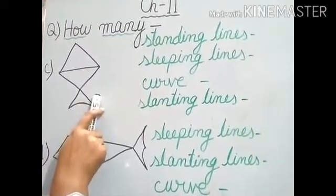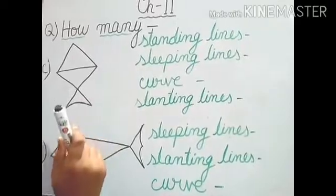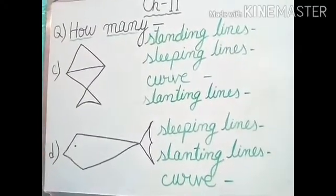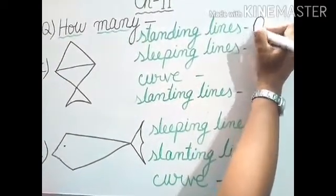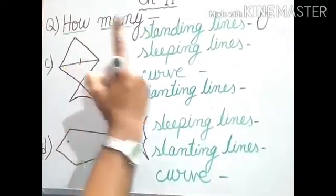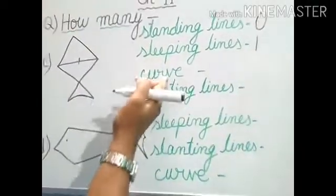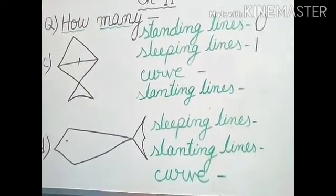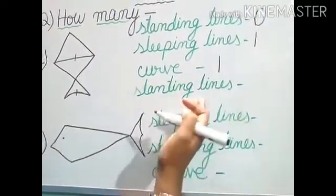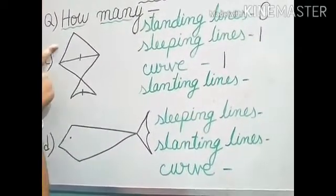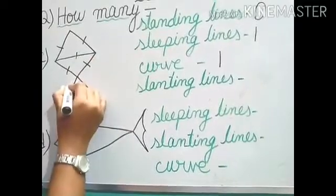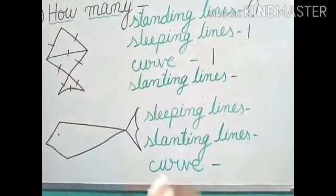Next, number C — what is this? Can you tell me? Yes, this is a kite. And this kite we are going to count the lines. First, standing line — any standing line can you find? No. So standing line we are going to write zero. Next, sleeping line — how many sleeping lines? Only one, this one. So one sleeping line. Now, curve — how many curve is there? Yes, this one, only one. So curve: one. And now slanting line — how many? One, two, three, four, five, six. Six slanting lines.